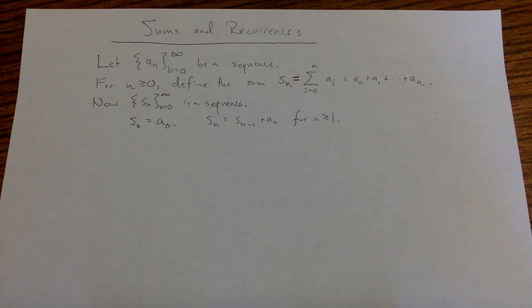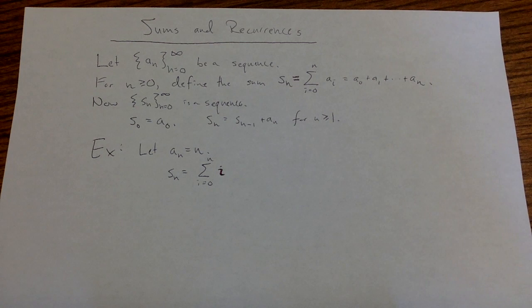It's this recurrence relation that will allow us to prove closed forms of sums using mathematical induction. For example, let's consider this summation. If I start with a sequence where a_n is always the number n, and I consider the sum from i equals 0 to n of i, I'm essentially adding up the numbers from 0 to n.